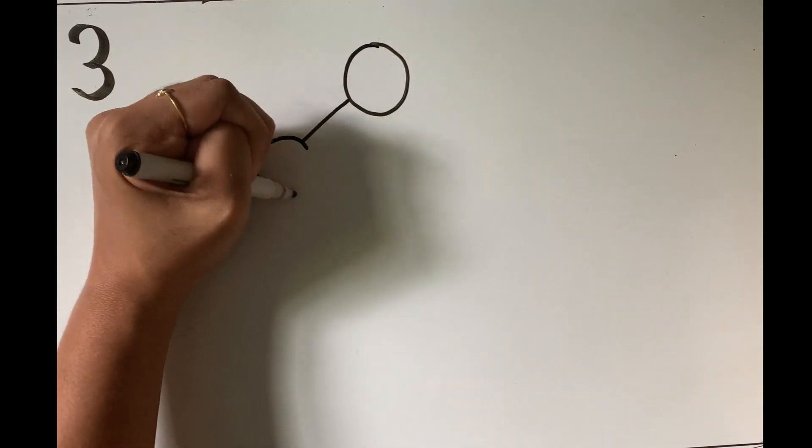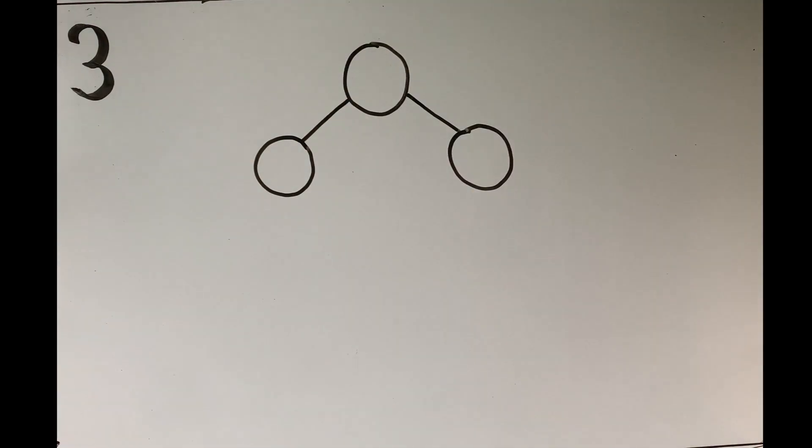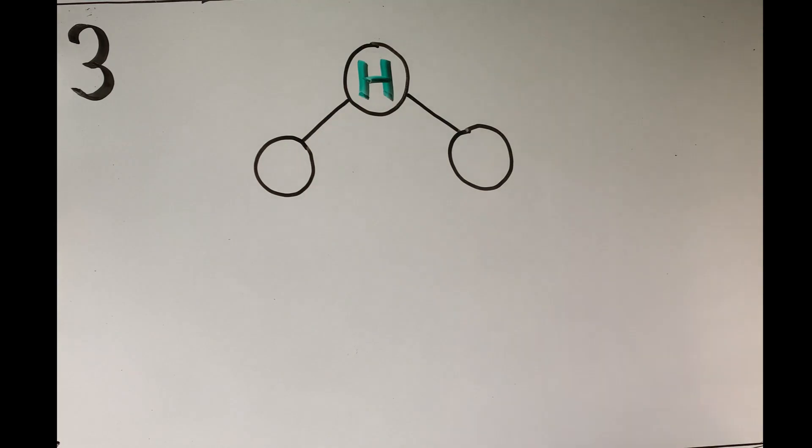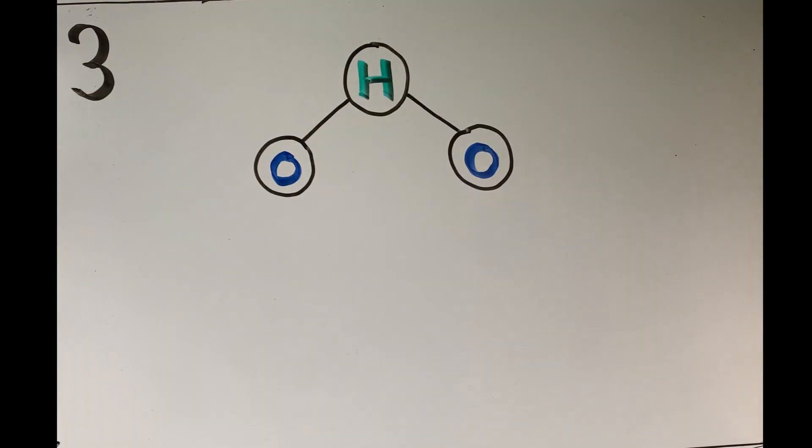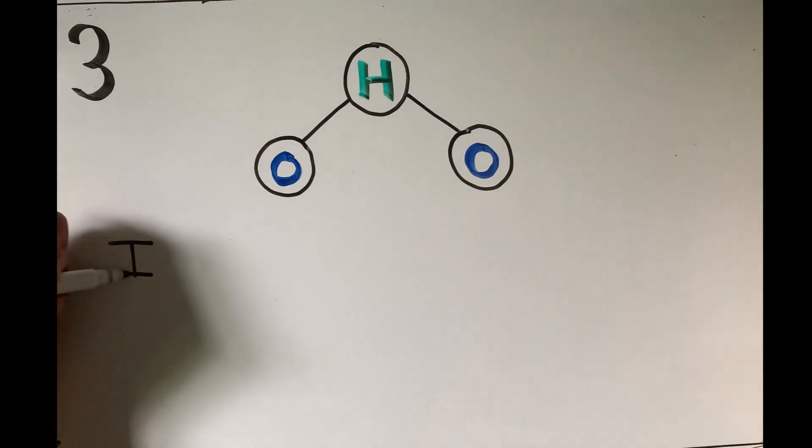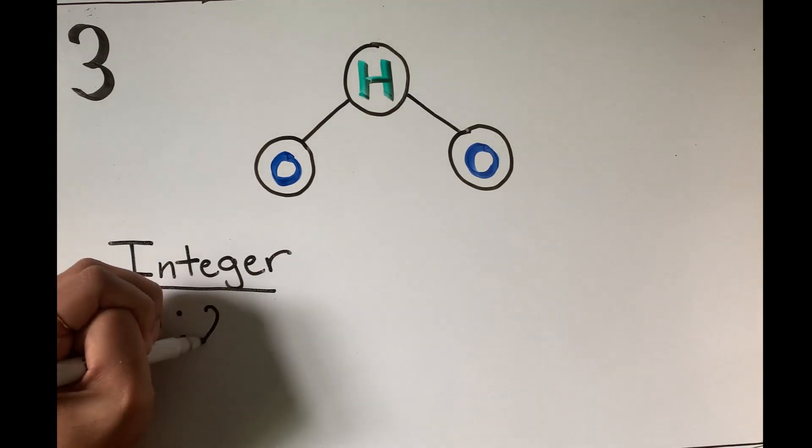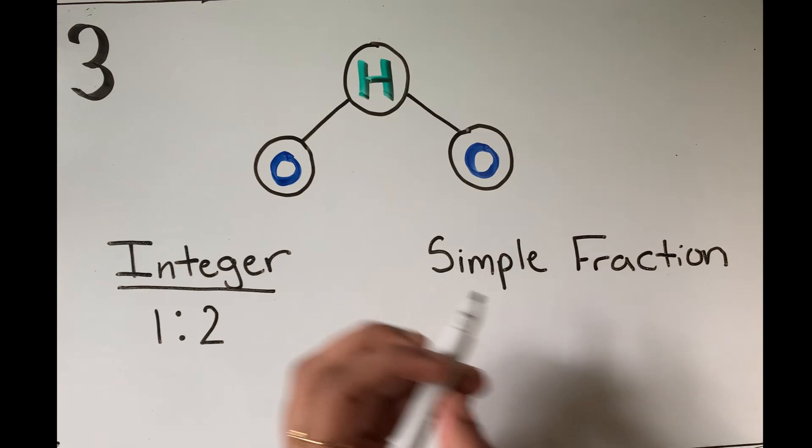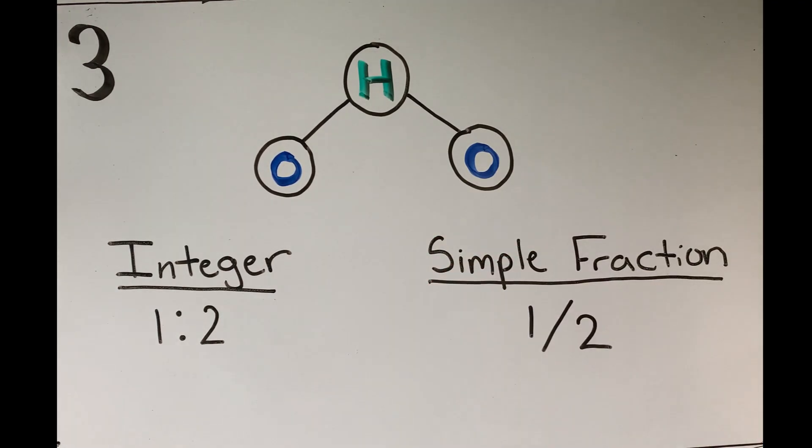The third idea defines compounds as being made up of atoms from more than one element. The number of atoms of any two elements in a compound also have a consistent ratio that's either an integer or a simple fraction. This idea supports the law of definite proportions and the law of multiple proportions.